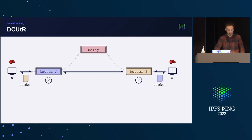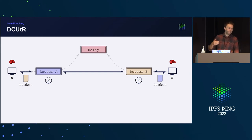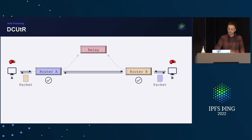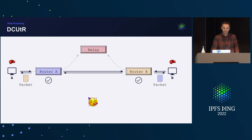That's in a nutshell how this hole punch — the Direct Connection Upgrade Through Relays protocol — works. Max has a more thorough talk covering all the details including the limited relay, so I highly recommend looking at one of his talks.